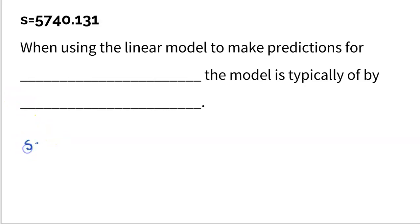Just to give another example: say you're predicting the weight of an elephant and your S — the standard deviation of residuals — is 9.5 pounds. When using the linear model to make predictions for the weight of an elephant, you're typically going to be off by 9.5 pounds. And when elephants weigh thousands of pounds, that's actually really, really good — a very low number. But change the problem to predicting the weight of a mouse: when using the linear model to make predictions for the weight of a mouse, being off by 9.5 pounds is terrible — mice only weigh less than a pound. So always think about context. Obviously smaller S is better, but apply the context of the problem. And we always would rather our R squared value be higher, showing a stronger connection between the two variables.